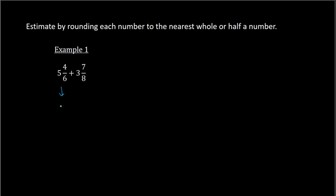So 5 and 4/6 is closer to 5 and 1/2. Then 3 and 7/8 — 7/8 is closer to the whole number. We determine if this is closer to 3, 3 and 1/2, or 4. This is closer to 4 because 7/8 is a pretty large fraction. So when you add 5 and 1/2 plus 4, you get approximately 9 and 1/2.